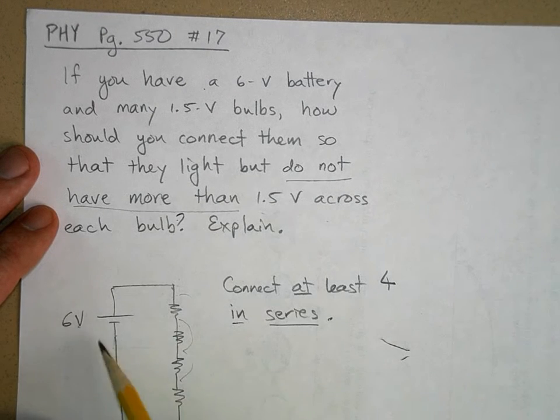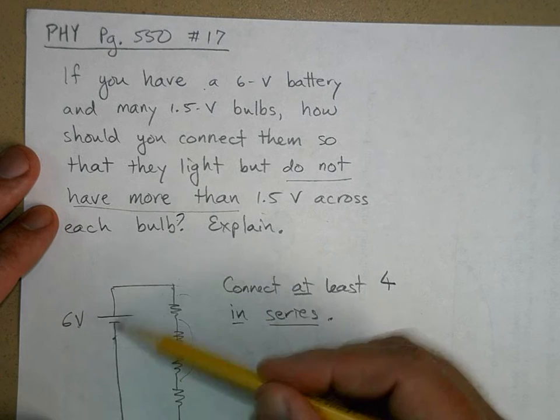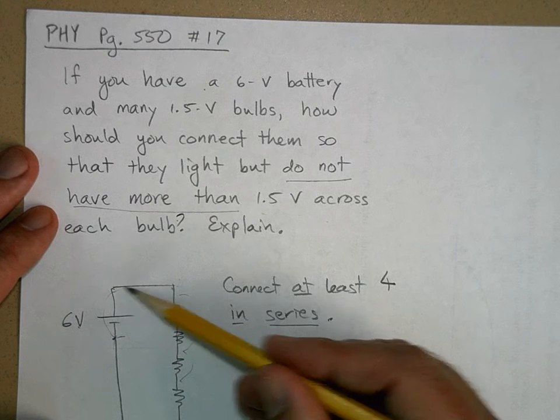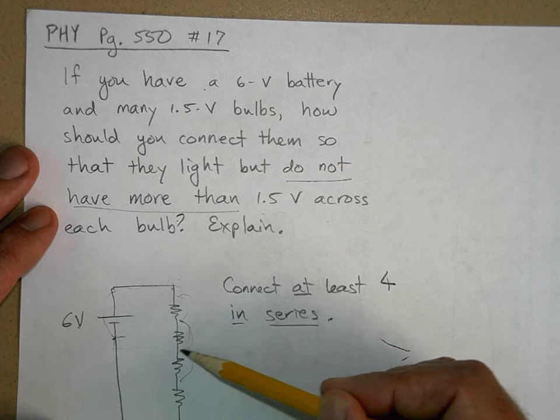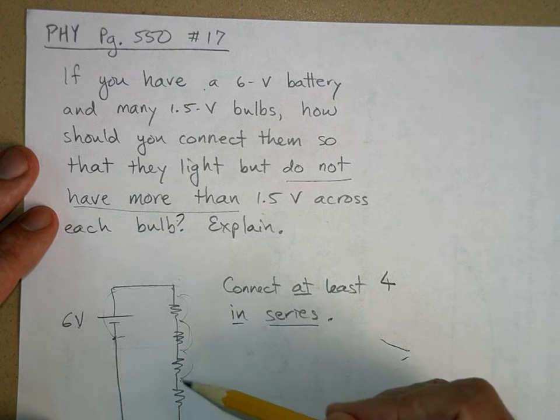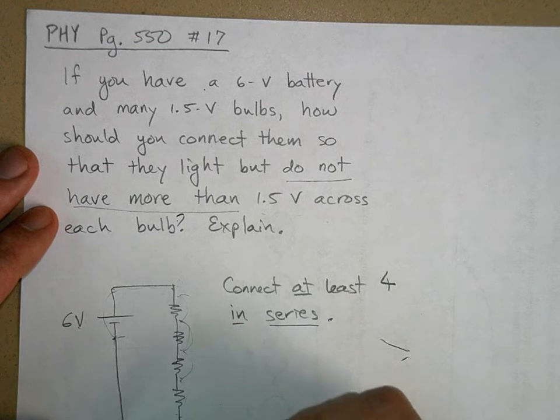Okay, because now we've got, if you start here, you got a 1, you start 0, now you have a 6-volt increase, but now you've got a 1.5-volt drop, plus 1.5 is 3 volts, plus 1.5 is 4.5 volts, plus 1.5 is 6 volts drop to get back to zero.